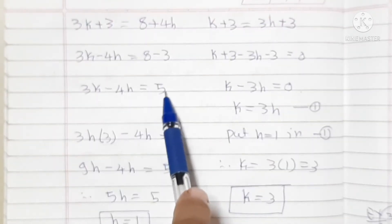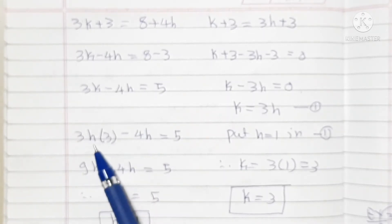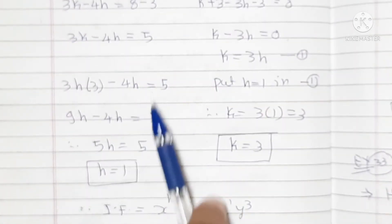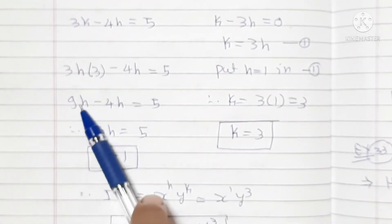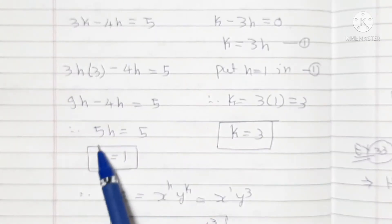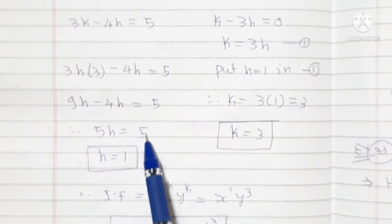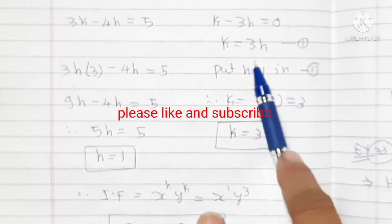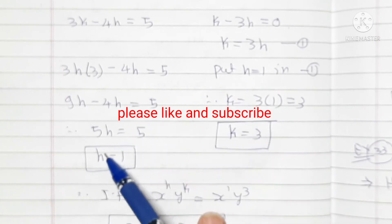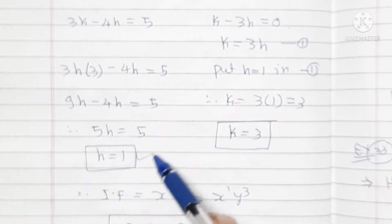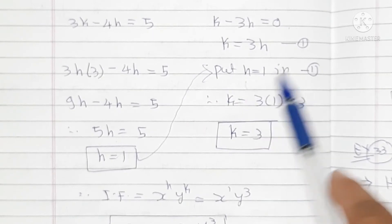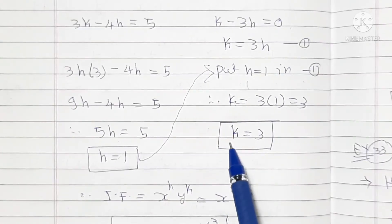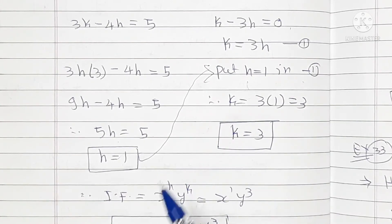Substituting k = 3h into Equation 1: 3(3h) − 4h = 5, so 9h − 4h = 5, giving 5h = 5, therefore h = 1. Substituting h = 1 into Equation 2: k = 3 × 1 = 3. So k = 3.